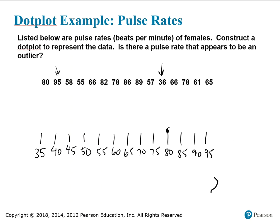Placing dots for each data value: 80, 95, 58, 55, 66, 82, 78, 86, 89, 57, 36, 36, 66. If we have two of the same data values, we stack them. Continuing: 61, 66, 78 — and yes, there's another 78, so we stack it.